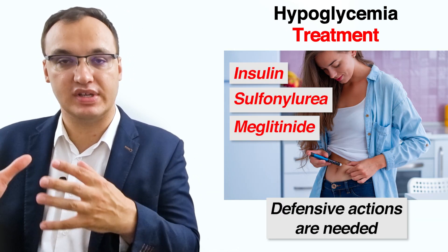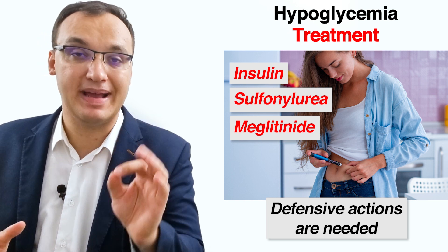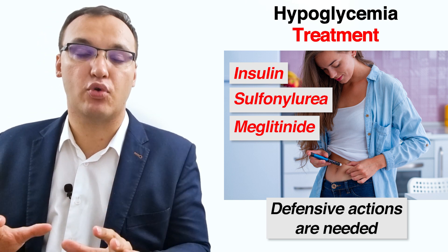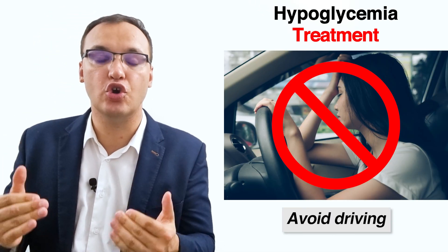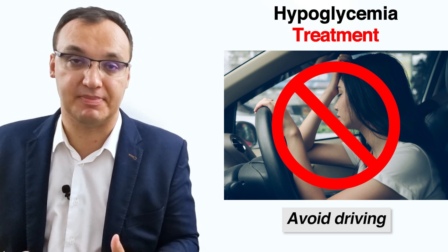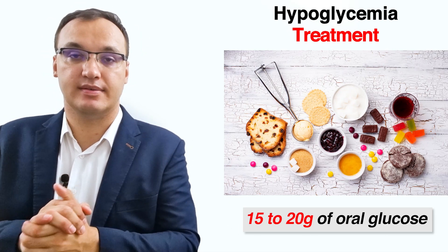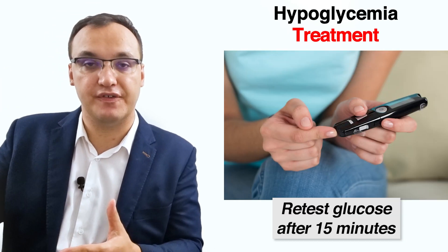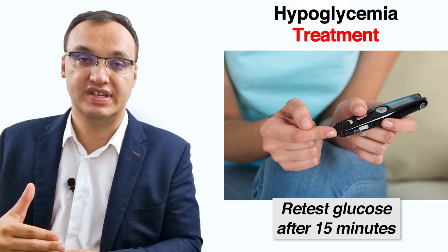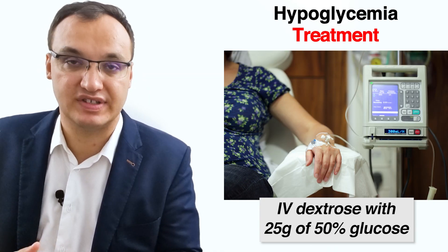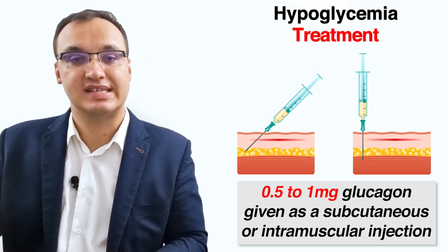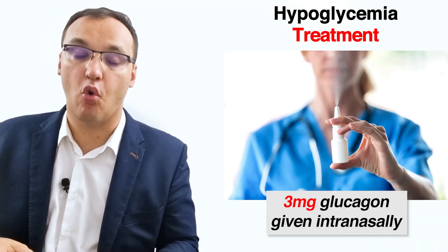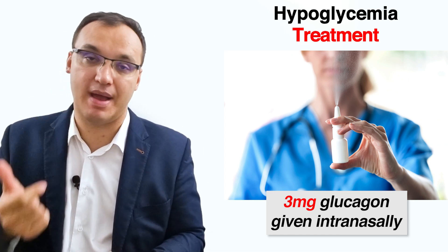Prevention involves assessing for risk factors and tailoring treatment to reduce them. For a person treated with insulin, sulfonylurea, or a meglitinide, it is important that you do not drive and that you take defensive actions, knowing that you can develop hypoglycemia and collapse. You should take carbohydrates if you feel symptoms, check again after 15 minutes, and take more carbohydrates if needed. In the hospital, you should receive intravenous dextrose with 25 grams of 50% glucose. If there is no intravenous access, give 0.5 to 1 milligram glucagon subcutaneously or intramuscularly, or 3 milligrams intranasally.